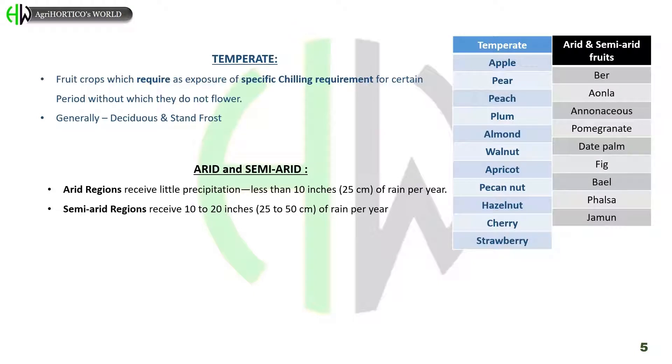Examples of arid and semi-arid fruit crops are bael, amla, annona (custard apple), pomegranate, date palm, fig, falsa, and jamun.